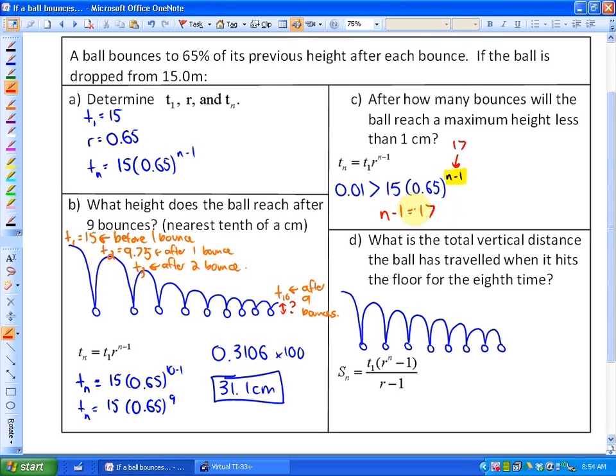But if you look at the pattern here, if it's the 18th term, that would actually be after 17 bounces. Or in other words, if you use the common sense method, that would be after. So whether you're looking at the pattern or not, it's going to be after 17 bounces that it's just less than 1 centimeter.